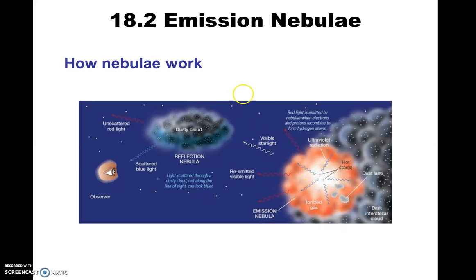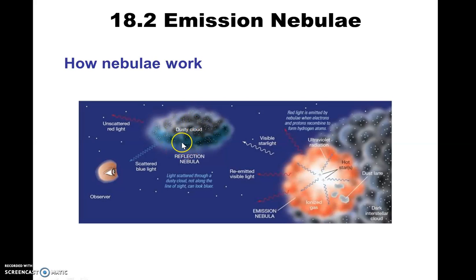If that light passes through a dust cloud between us and the emission nebula, what will happen is that the light — all the colors of the rainbow in visible light — will interact with the dust cloud. This dust cloud would reflect some of the light. It's not going to reflect all of it, but it tends to reflect the blue light. Those are what we call reflection nebulae.